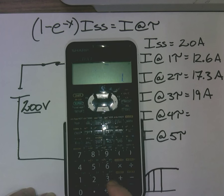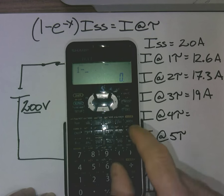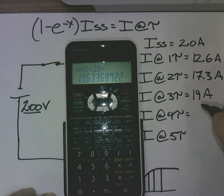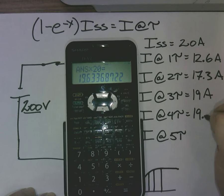Clear that out. 1 minus second function e to the negative 4 equals, multiply that by 20 and I end up with 19.6 amps.